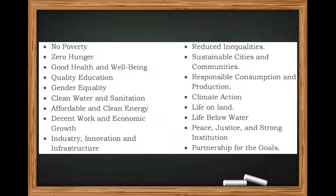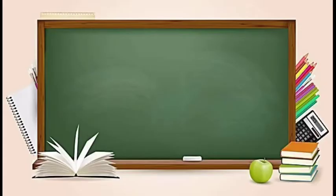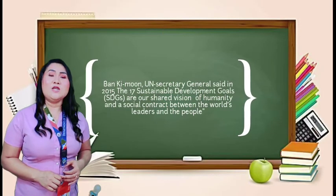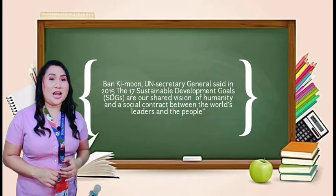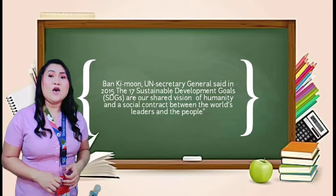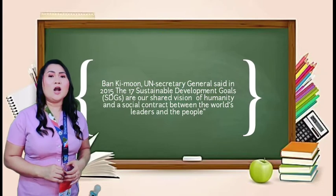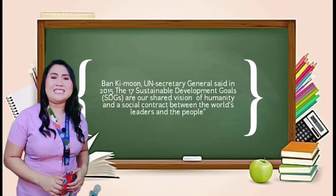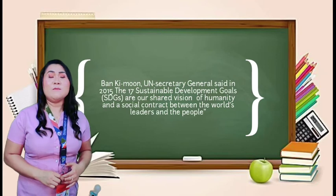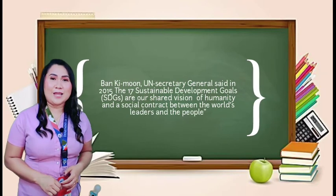Climate action, life on land, life below water, peace, justice and strong institution, and lastly, partnership for the goals. Ban Ki-moon, United Nations Secretary General, said in 2015: 'The 17 Sustainable Development Goals are our shared vision of humanity and a social contract between the world's leaders and the people.'